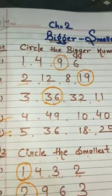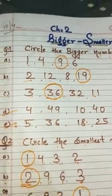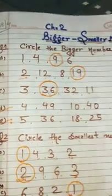So in this way you have to answer the questions. First question is, circle the bigger number.